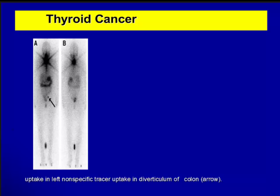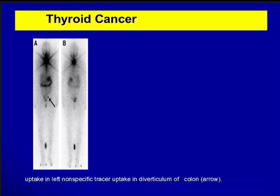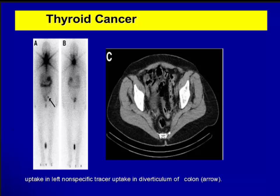SPECT-CT shows multiple diverticula in the colon, with one diverticulum showing tracer uptake — answering the question of what the pelvic activity represents. Gopi will talk in more detail about sentinel node imaging.